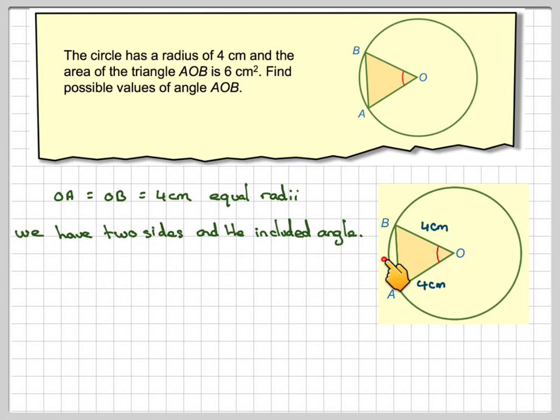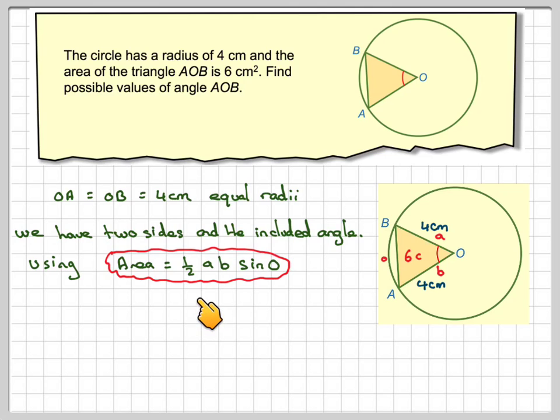Labelling the sides, we've got this one is small o, this one small a, and this one small b, and we're going to use the area of the triangle will be half ab sine of the angle.